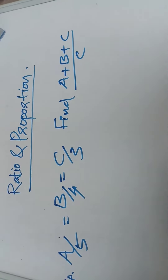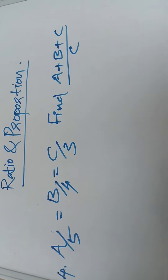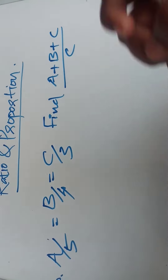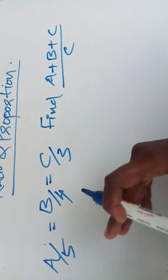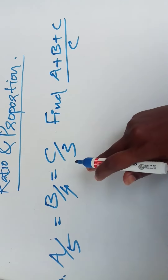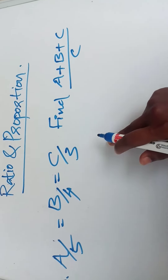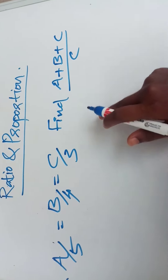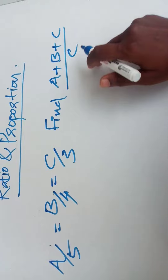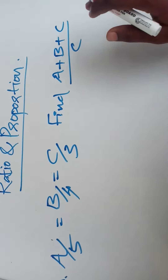A ratio and proportions type problem: a by 5, b by 4, c by 3. Find a plus b plus c by c.